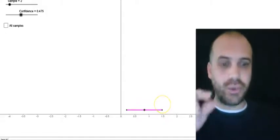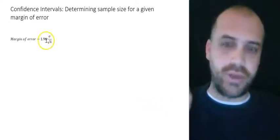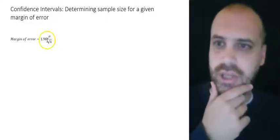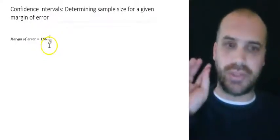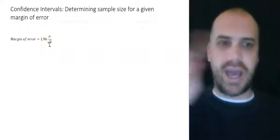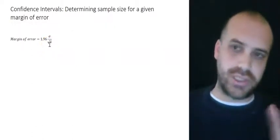And it's given by the portion of our formula, 1.96, if it's a 95% confidence interval, times the population standard deviation over the square root of the sample size. That's the thing that you add and subtract from your sample mean to give you your confidence interval.